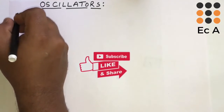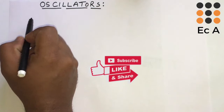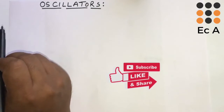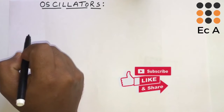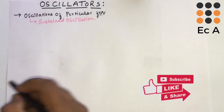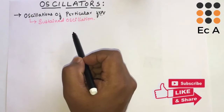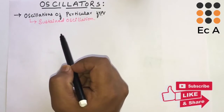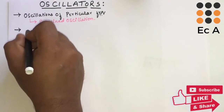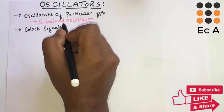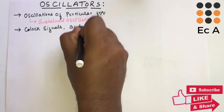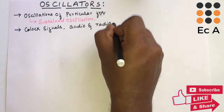An oscillator is a very important electronic device. It generates oscillations of a particular frequency and these oscillations should be undamped oscillations, or sustained oscillations. It is used to generate clock signals for electronic circuits and it is also used in audio and radio frequencies.